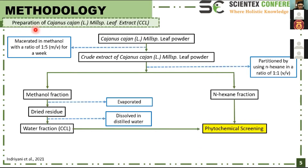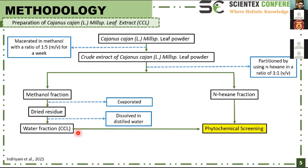Firstly, preparation of Cajanus cajan leaf extracts: the leaf powder was macerated in methanol at a set ratio for one week. Then, the crude extract was partitioned using N-hexane to form methanol fractions and N-hexane fractions. The methanol fraction was evaporated to form a dried residue, which was then dissolved in water to form the water fraction. All fractions were checked using phytochemical screening.